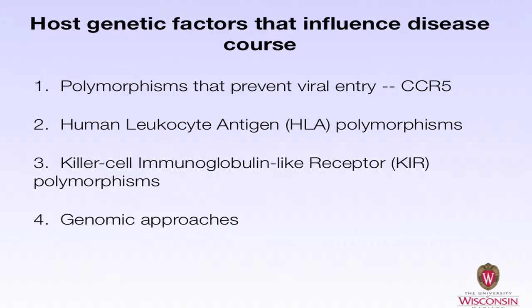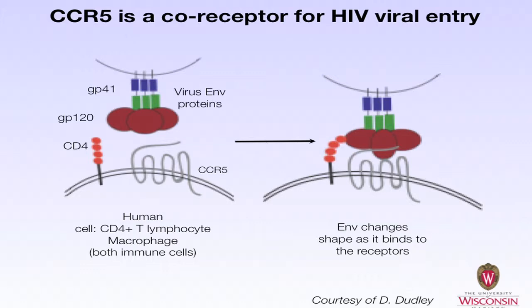We'll start with CCR5. As many of you know, CCR5 is a co-receptor for HIV viral entry. On the left, you can see a CD4 T cell which has a CD4 molecule and a CCR5 co-receptor. Here's a picture of the viral envelope protein, and it has to interact with both CD4 and CCR5 in order to detect and infect a CD4 T cell.